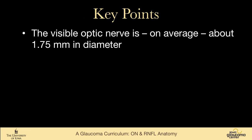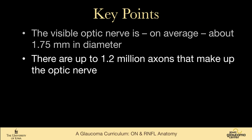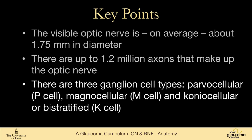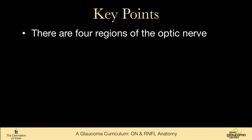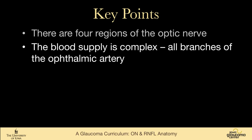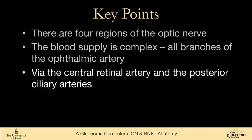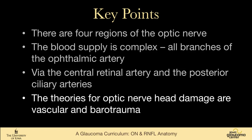Key points: the visible part of the optic nerve is on average about 1.75 millimeters in diameter, made up of up to 1.2 million axons. There are three ganglion cell types — parvocellular, magnocellular, and coniocellular — and 80% are parvocellular. There are four regions of the optic nerve. The blood supply is complex, all branches of the ophthalmic artery via the central retinal artery and the posterior ciliary arteries, with some contribution from the pia to the retrolaminar portion. The theories for optic nerve head damage are vascular and barotrauma, or a combination of both. This is an overview of the anatomy of structures damaged in glaucoma; section 9 will cover what you'll see as an examiner when looking at patients with glaucoma.